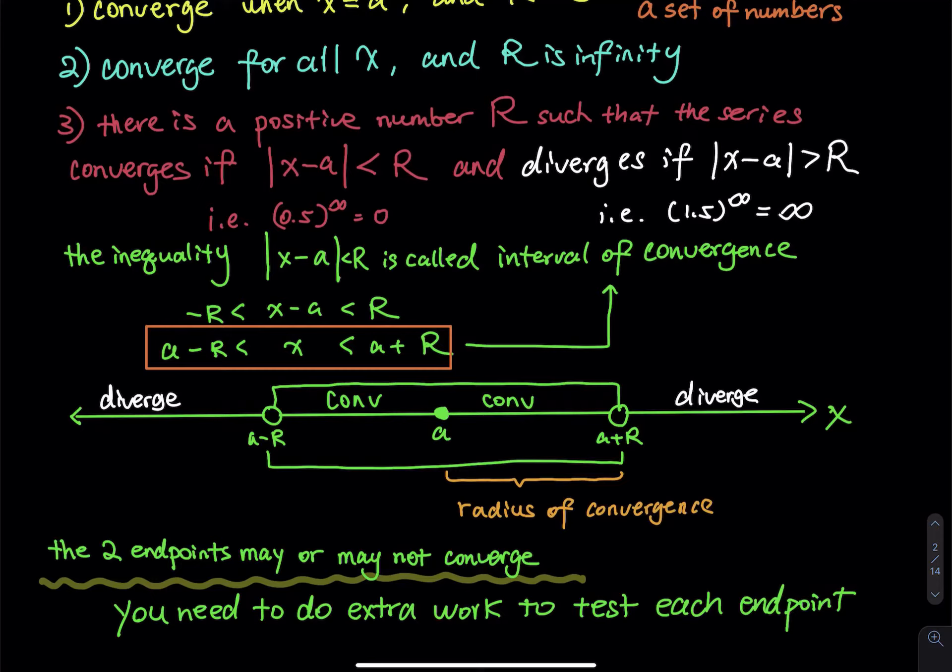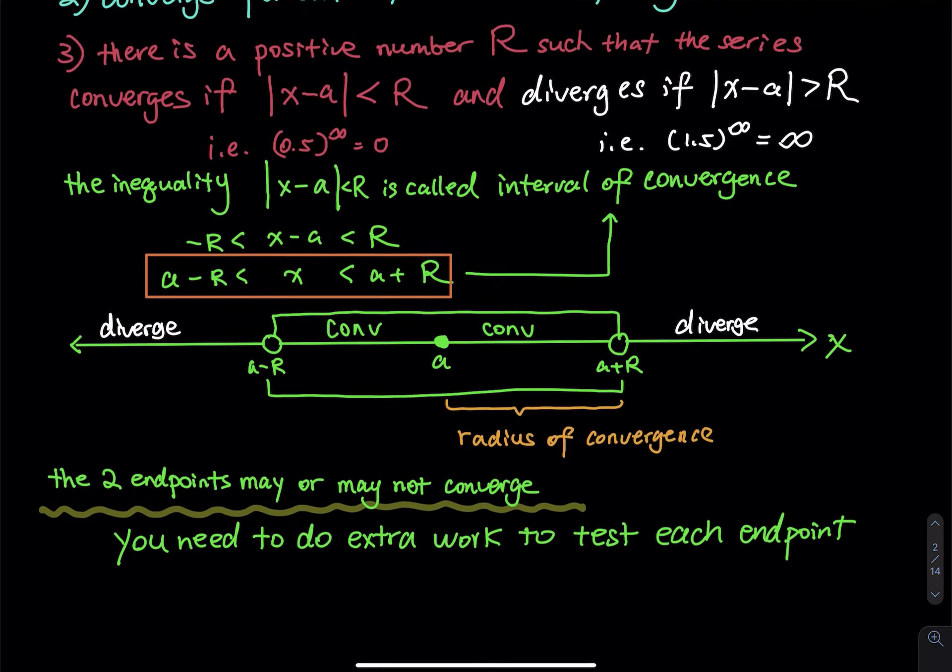If the x value is outside of this interval, then those x values will make the power series diverge. Do you see that there are two open circles, one at a minus R and one at a plus R? That is super important.